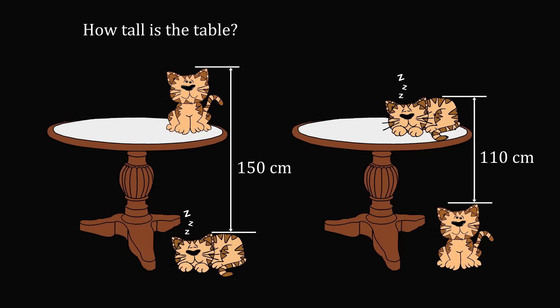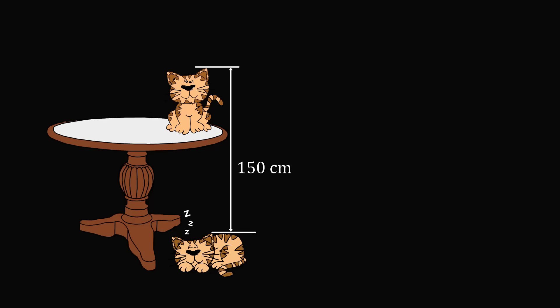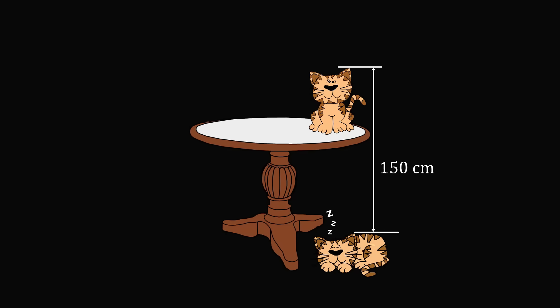Let's go through it step by step, focusing on one diagram at a time — starting with the left diagram. We wish to solve for the height of the table, which is an unknown quantity. Let's denote the height of the table from the floor as the variable t. We don't know the height of the sitting cat or the sleeping cat either, so let's say the height of the sitting cat is c, and the height of the sleeping cat is a. We have three unknowns: c, a, and t.